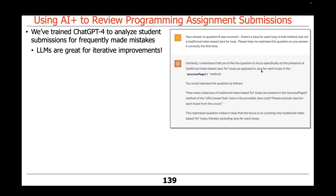For example, here's an instance where I knew something was wrong with a piece of code, but ChatGPT wasn't getting it right the first time. Rather than throw up my hands and say the emperor has no clothes, I asked ChatGPT some questions. I said: your answer was incorrect — there was indeed a Java for loop, but not a traditional index-based for loop; you missed this. Please help me rephrase my question so you answer it correctly the first time. Because ChatGPT is agreeable and helpful, it gave me a way to rephrase with more context — and large language models love context. The more context, the more accurate they typically are.